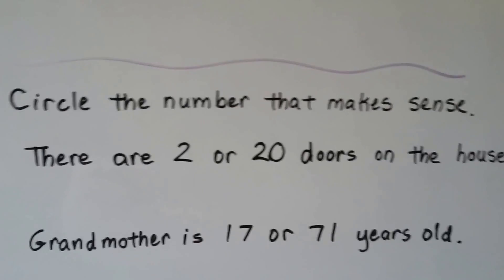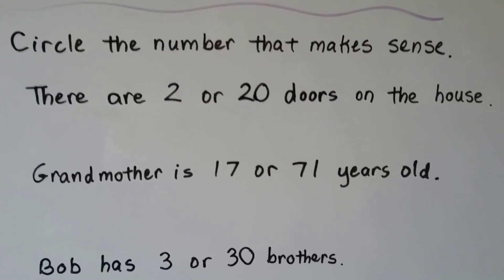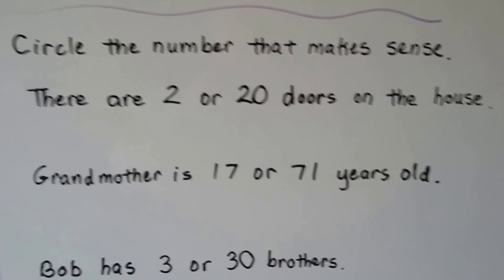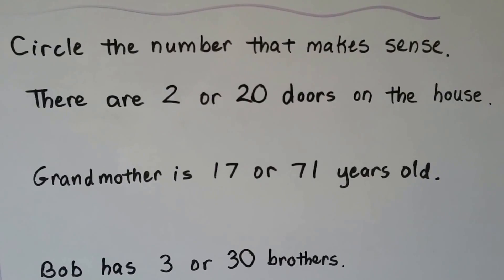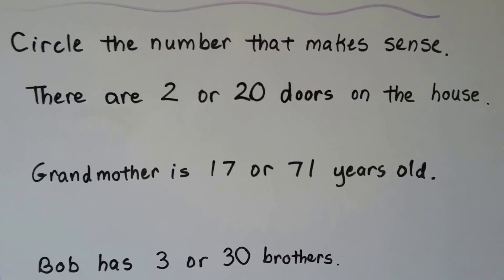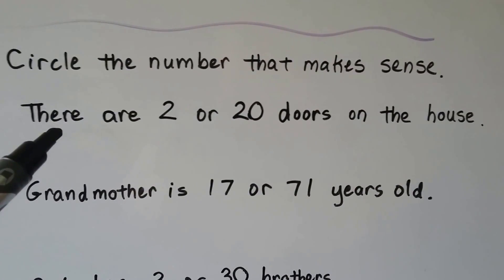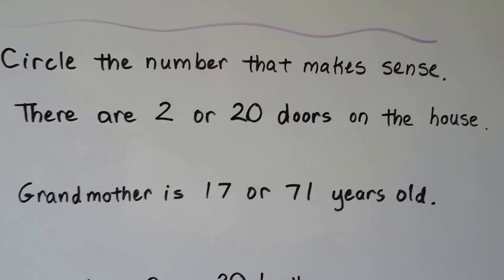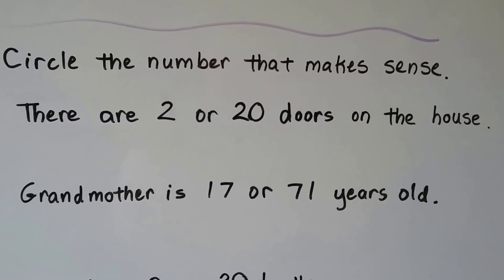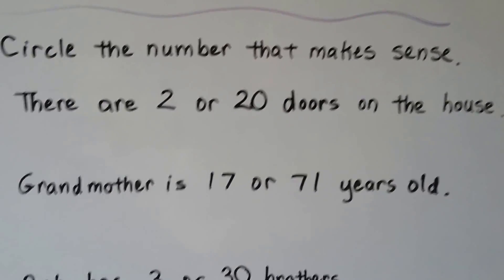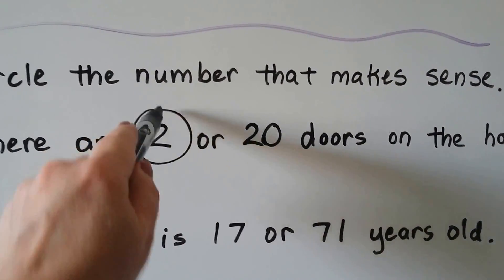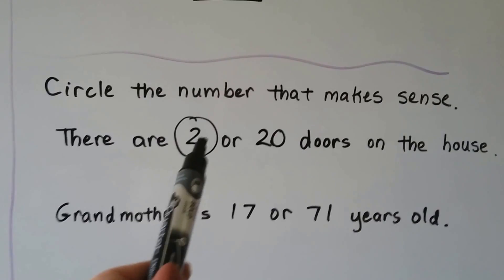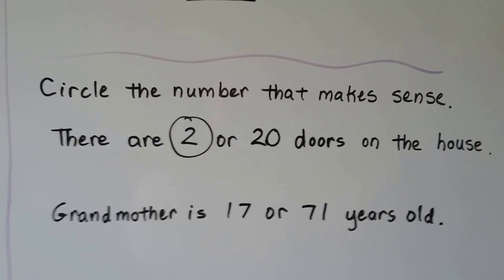Circle the number that makes sense — we want to think about what would make sense or what would sound silly. There are two or 20 doors on the house — which makes more sense? Would a house have two doors or 20 doors? Two doors is right. Maybe an apartment building might have many doors, but a house would have two doors — that makes more sense.